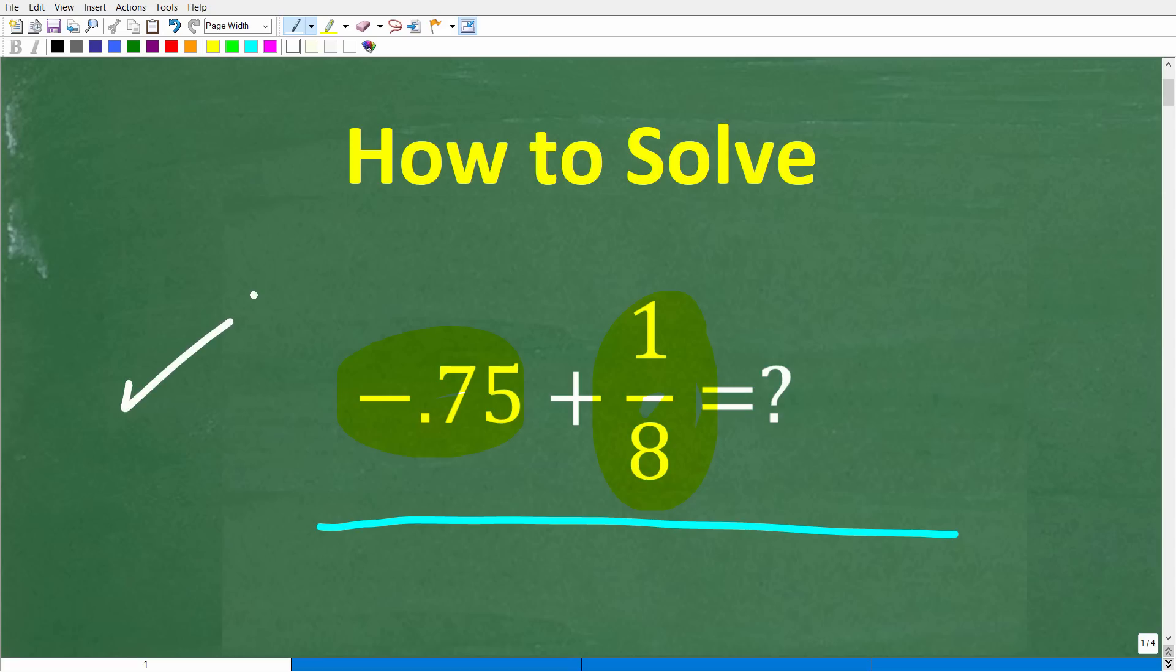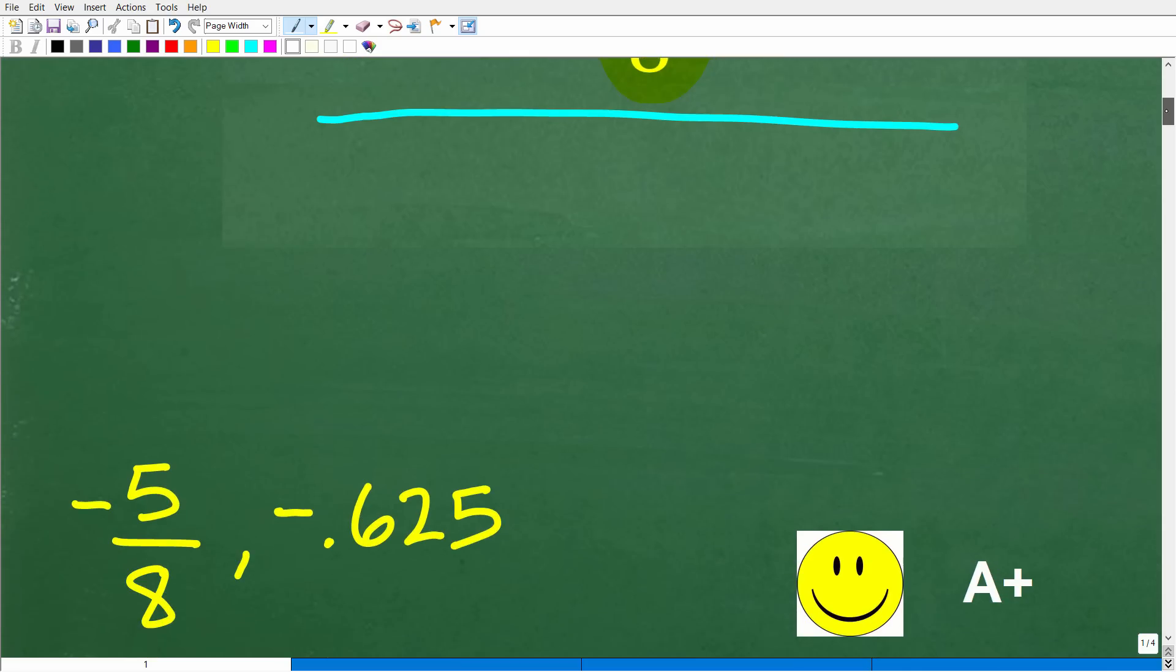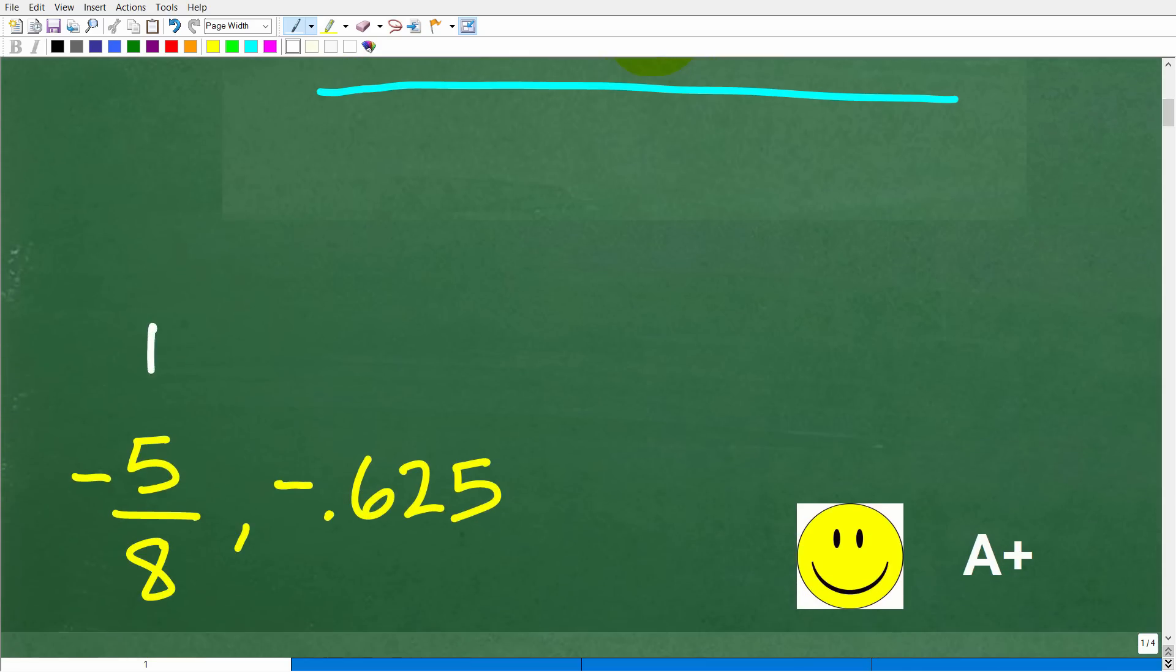I'll share the correct answer in just one second, then of course I'm going to solve this problem step by step. Alright, so once again we have negative 0.75 plus 1 eighth. What is the correct answer? Well, the correct answer is one of these right here. So in fraction form, you would have negative 5 eighths, and in decimal form you have negative 0.625.